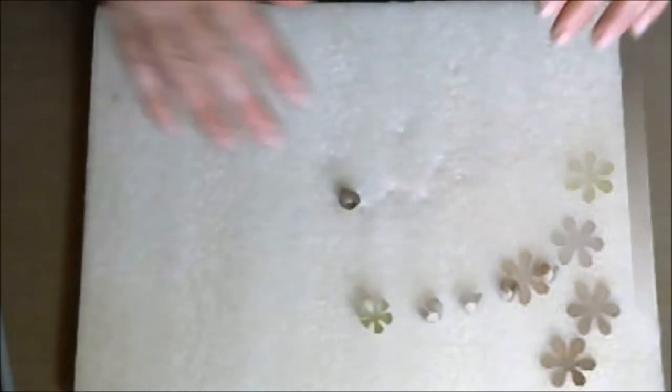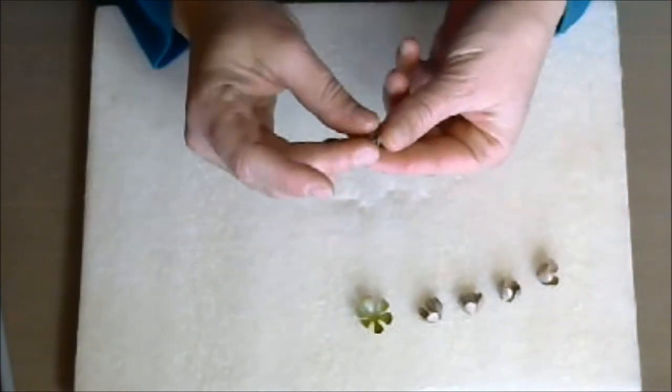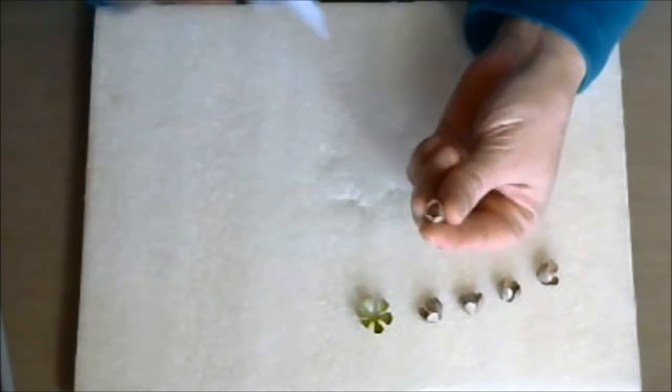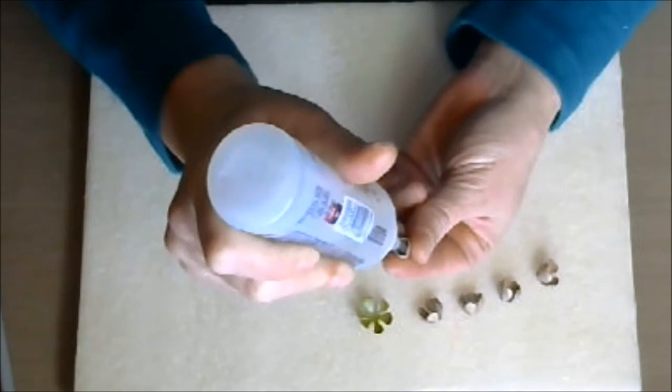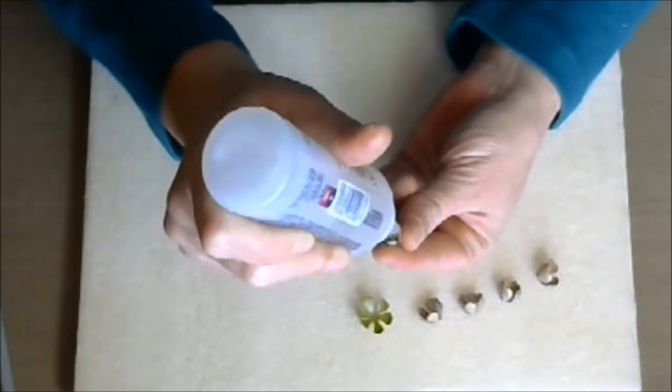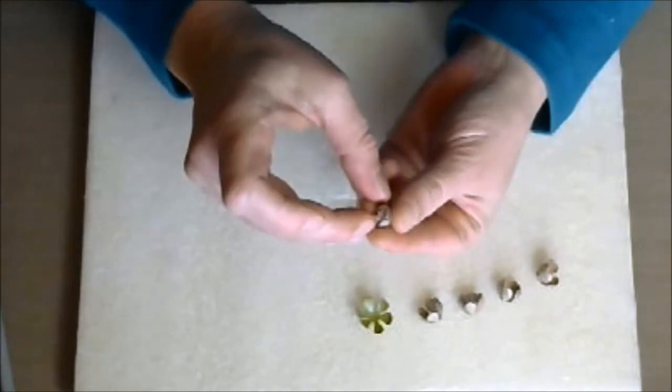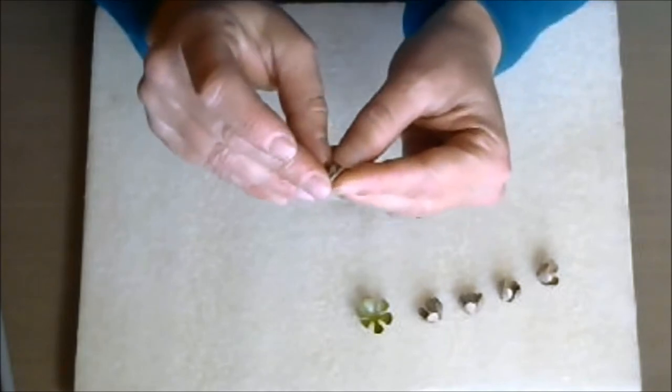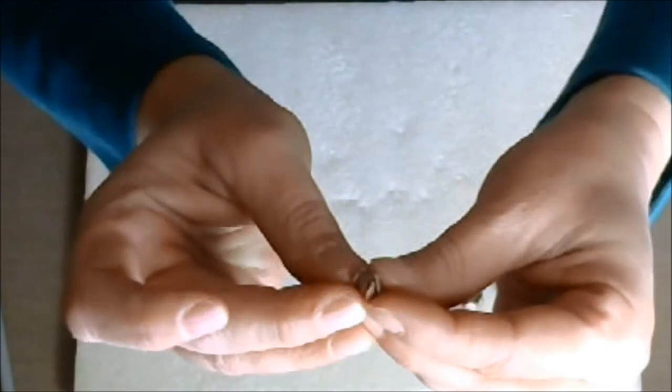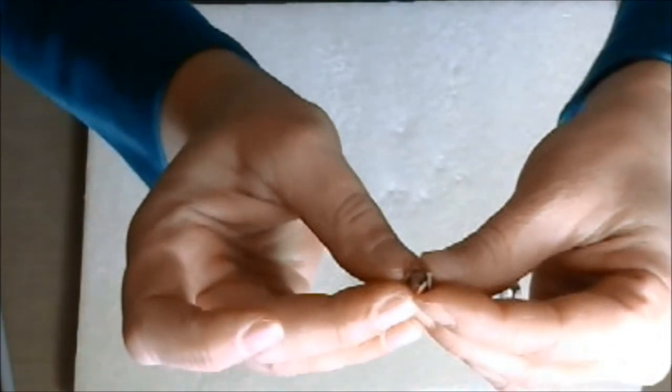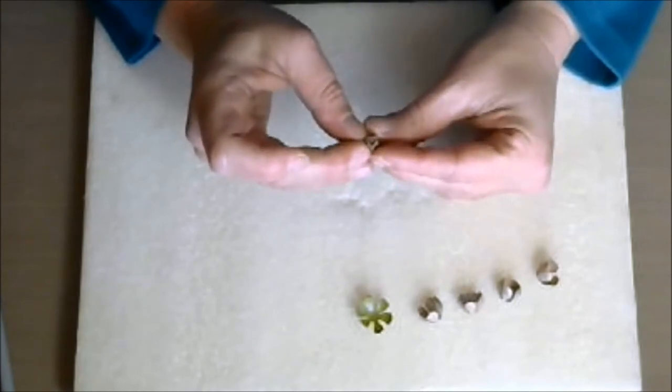Okay, I went ahead and finished rolling all of my flowers and cupping them. Now I'm going to take this one, which is my bud, and I'm just going to take my fabric tack glue. I'm just going to tack these pieces together because I want it to form a nice tight bud. I have a little bit of extra glue on there but that's okay, it dries clear. And that is the center of my flower. I'll just let this sit for a minute and dry.